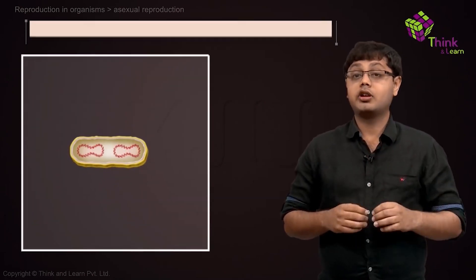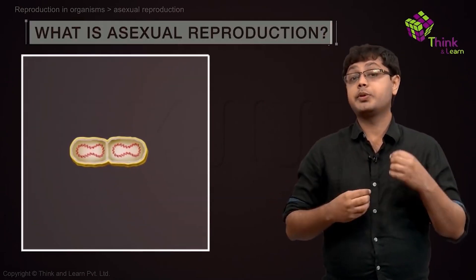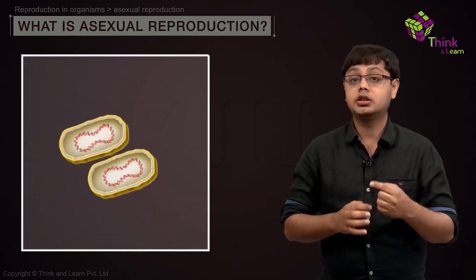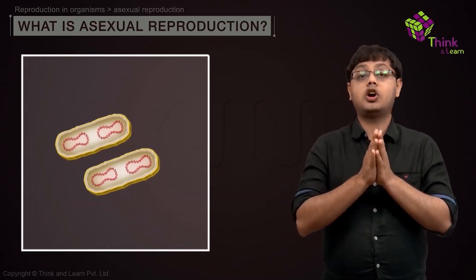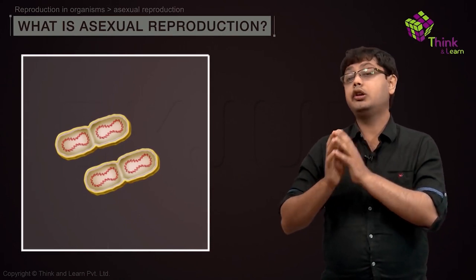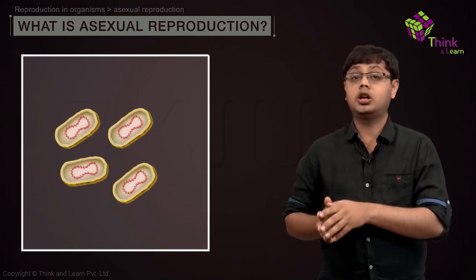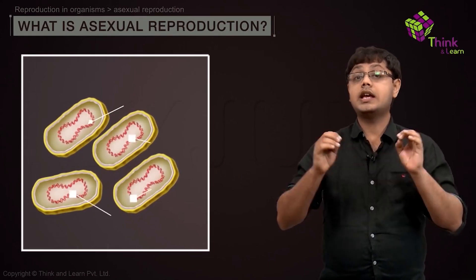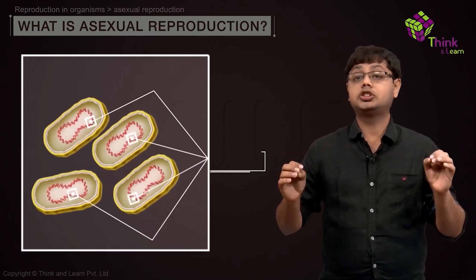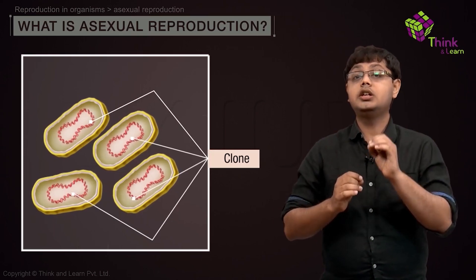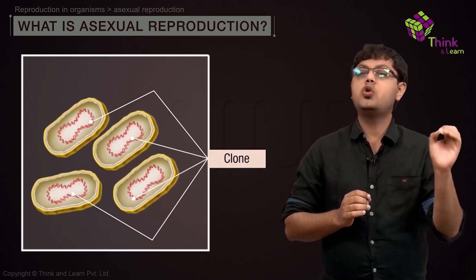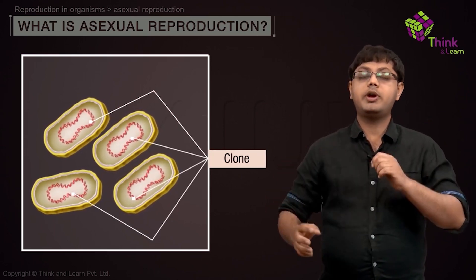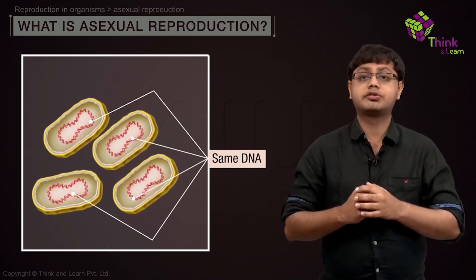In asexual reproduction, offsprings arise from a single parent. These offsprings are clones of each other and of the parent organism, which means asexual reproduction creates little to no genetic variation between parent and offspring.